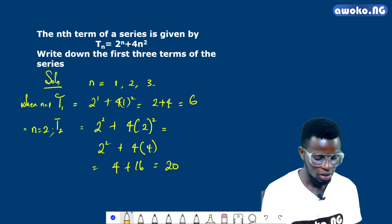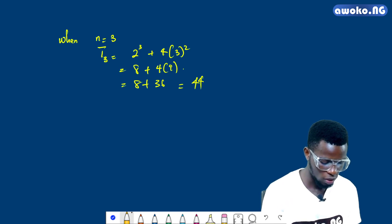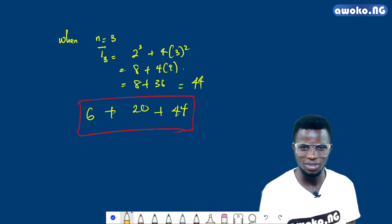Therefore, from the question we were asked to write down the first three terms of series, which will give us 6 plus 20 plus 44 as the first three terms of the series. It is very simple.